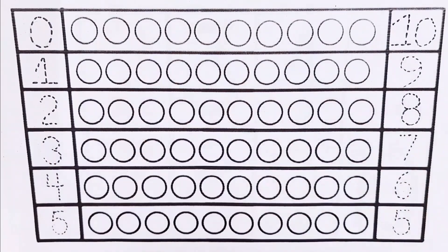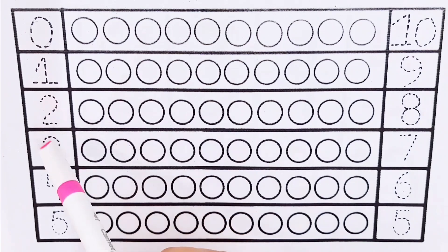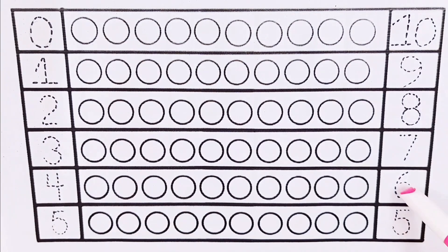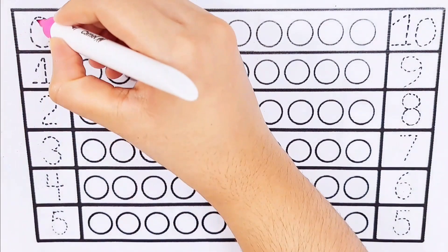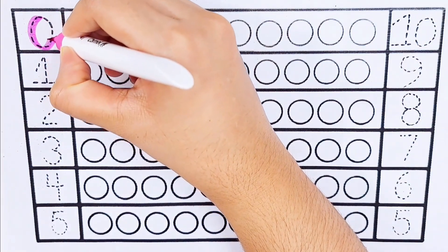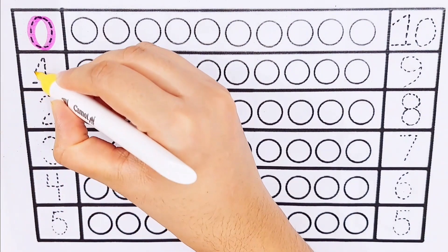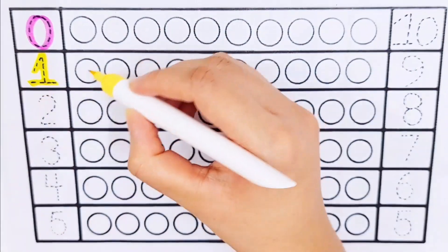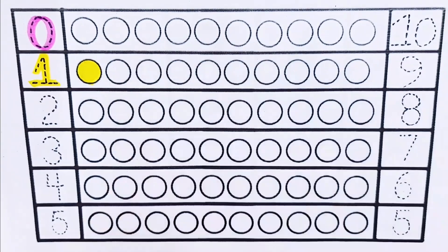Let's learn to count some numbers: 0, 1, 2, 3, 4, 5, 6, 7, 8, 9, 10. Zero — zero balls. Number one — one ball.